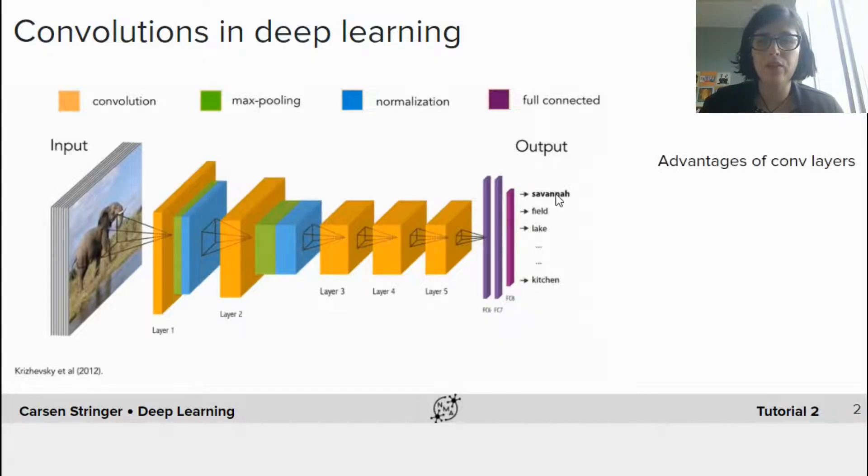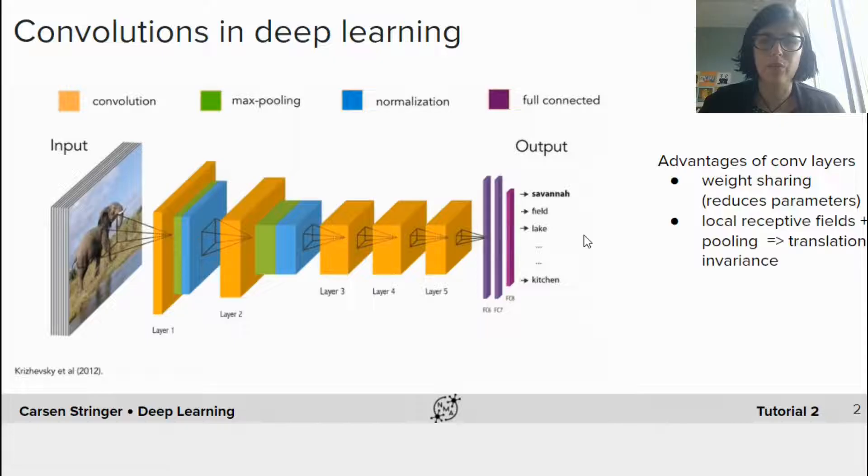The main advantages of convolutional layers over fully connected layers are the reduction in parameters through weight sharing, which we will get into shortly, and also the fact that these units have local receptive fields. These local receptive fields allow the network to pool over units in spatial proximity and help the network learn translation invariant representations.